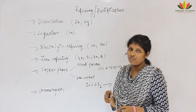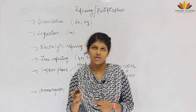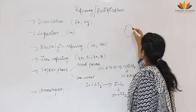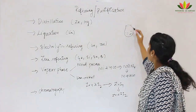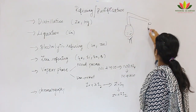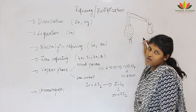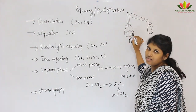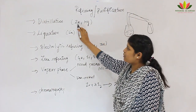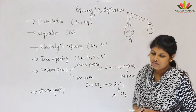The first method is distillation. We evaporate and then condense; based on different boiling points we can separate mixtures. We heat a metal with impurities — on condensation, the metal is collected as the distillate while impurities evaporate and condense separately. Using distillation, zinc and mercury can be purified.